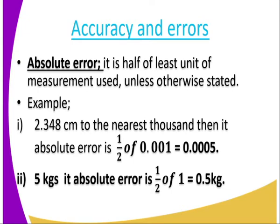Example two: we have 5 kg. What is the absolute error? What is the least unit? It is 1 kg. So in that case, the absolute error is half of 1, which gives 0.5 kg. So now you have an idea of what we refer to as absolute error — it is half of the least unit of measurement used, unless stated otherwise.